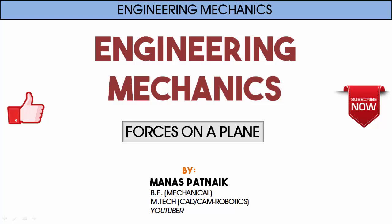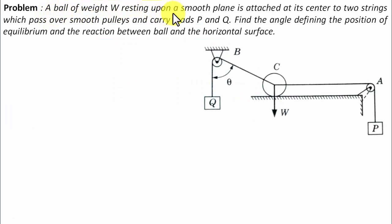Hi there guys, hope you're doing well. This is your friend and tutor Manas. So let's see what this problem has in store. Here we go. A ball of weight W resting upon a smooth plane is attached at its center to two strings which pass over smooth pulleys and carry loads P and Q. Find the angle defining the position of equilibrium and the reaction between the ball and the horizontal surface.